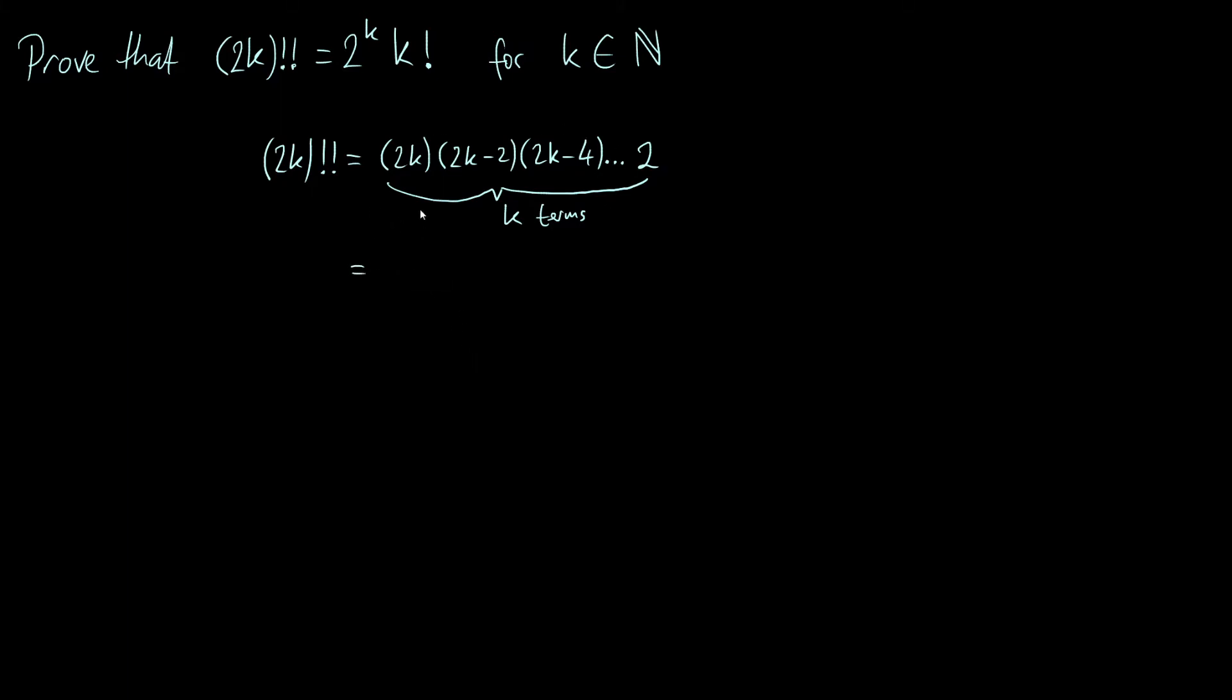What we can do is notice that all of these terms have a common factor of 2. If we factorize out a factor of 2 from each of these terms, our first term is 2 times k, then the next term is 2 times (k-1), then the next term is 2 times (k-2).